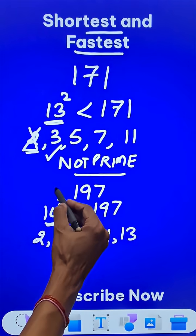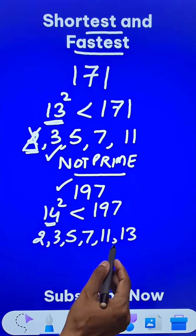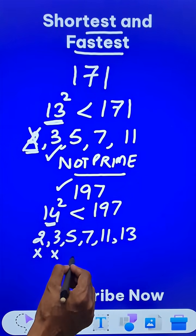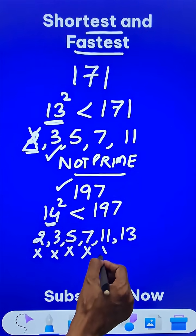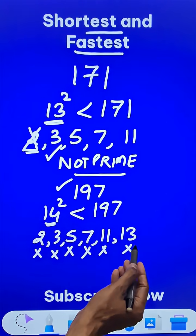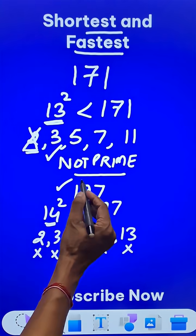Now if you start checking the divisibility of 197 by all these numbers, you will find that 2 will not divide this, 3 will not divide this, 5 no, 7 no, 11 no, and 13 no. Since all these prime numbers do not divide 197, this 197 is a prime number.